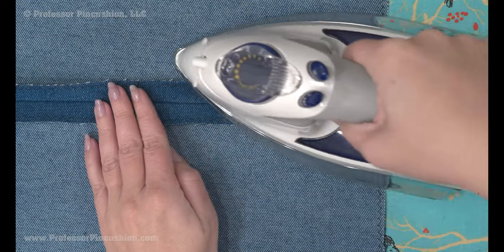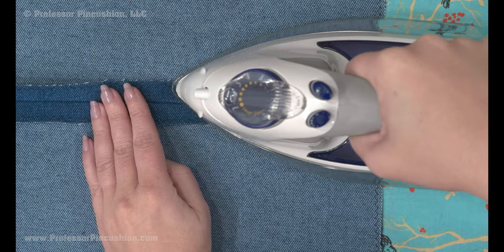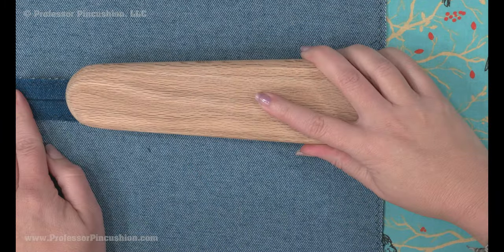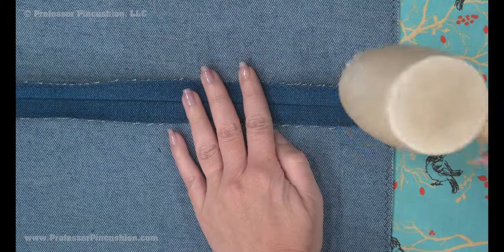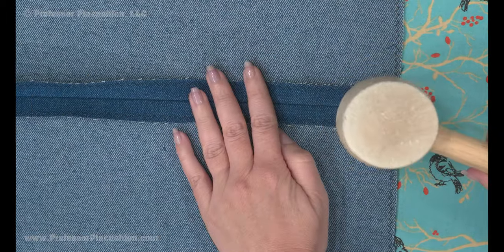When working with denim, pressing is really important. You'll want to use a high heat setting and steam. To really flatten seams, you can use a clapper or use a mallet to hammer areas after applying steam.